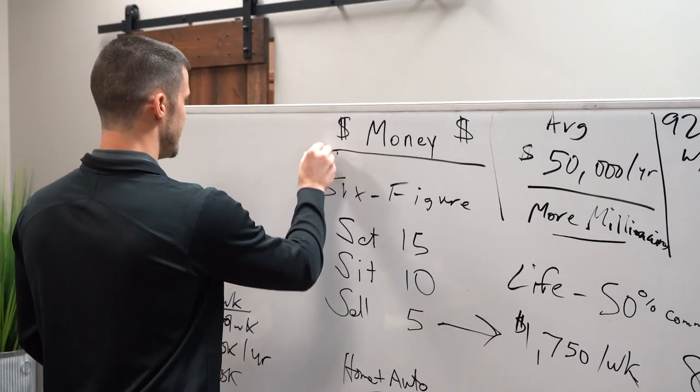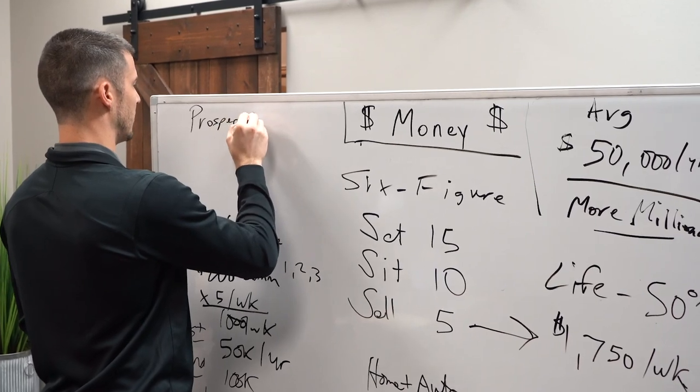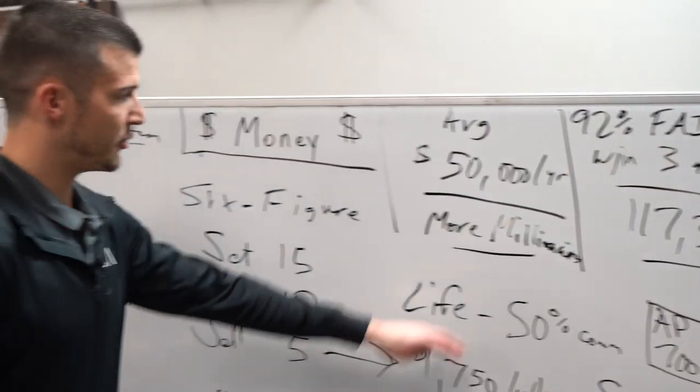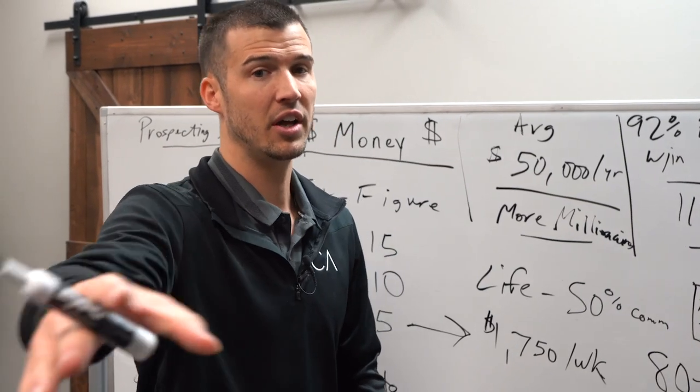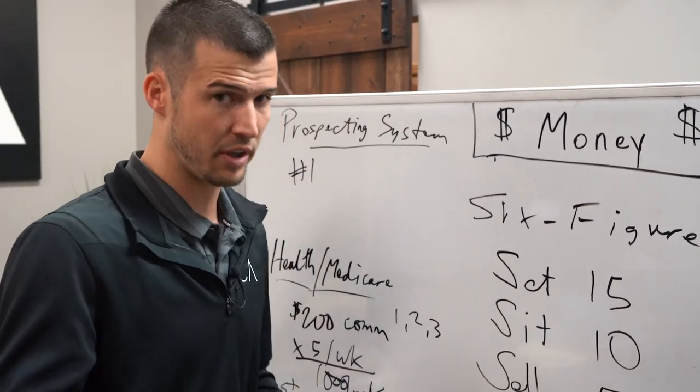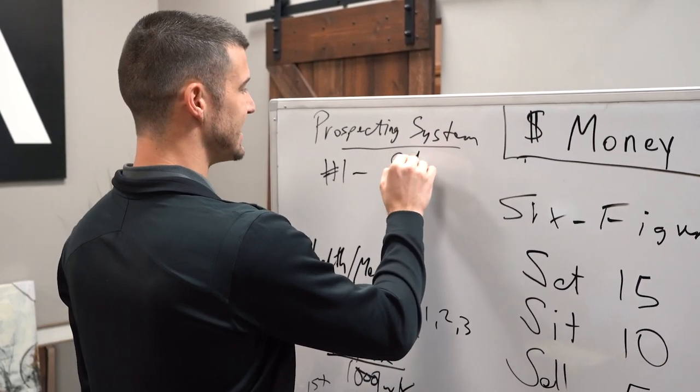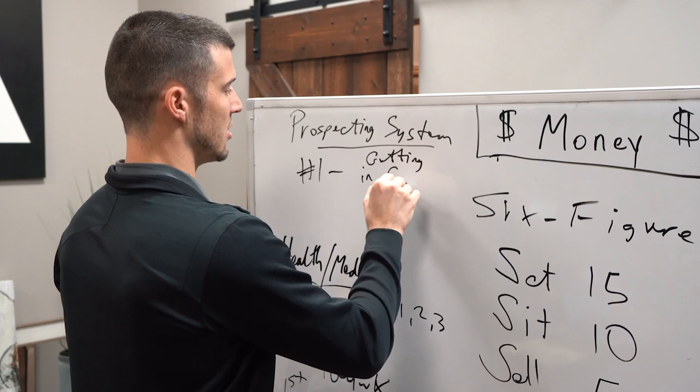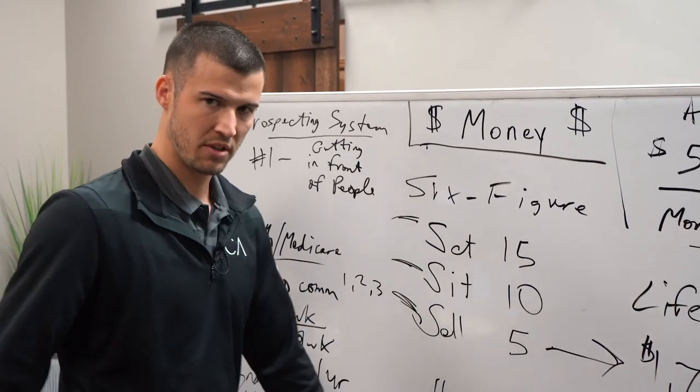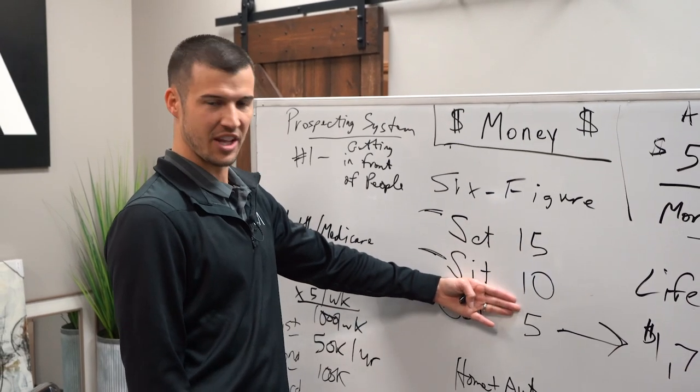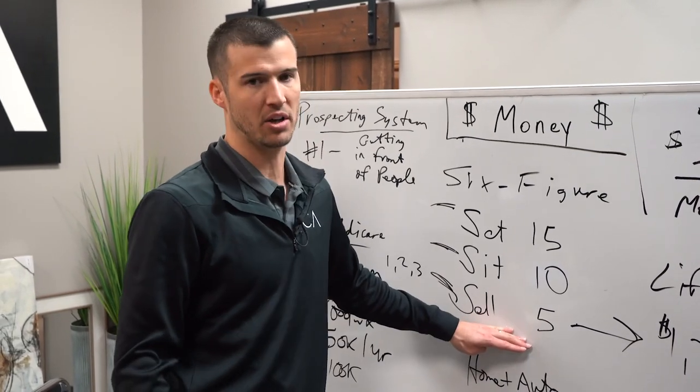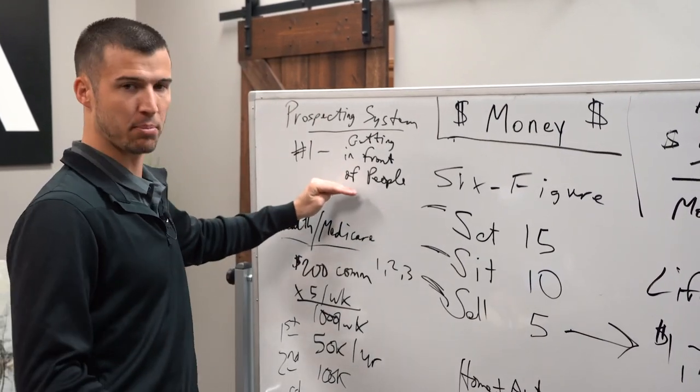The whole key to this is you need a prospecting system. The only reason that insurance agents, that this happens, that 92% fail, and the reason the average is this, and the reason that most people fail, and you maybe will too, hopefully not if you're watching this video, the only reason why, the number one reason why insurance agents fail, the number one thing they struggle with, the number one thing you probably struggle with, is getting in front of people. That's the toughest part of this business. Because if you don't start with this, you can't get this. If you don't get this, you can't get this.